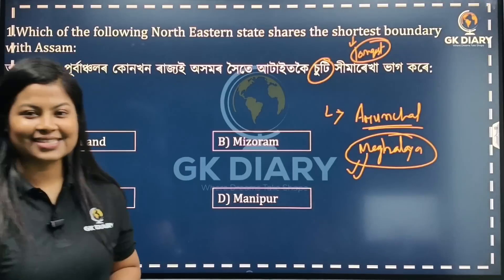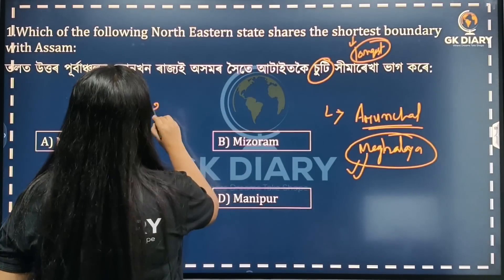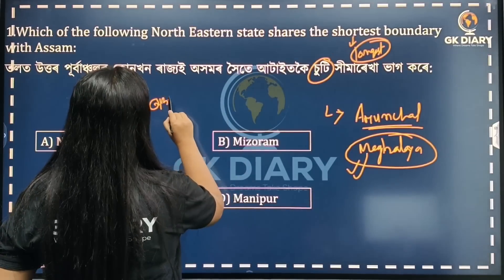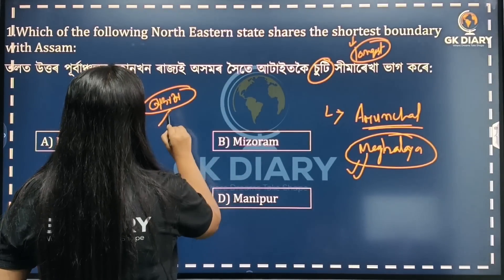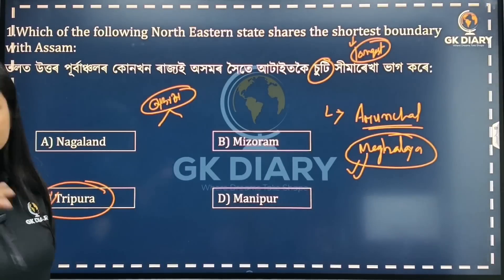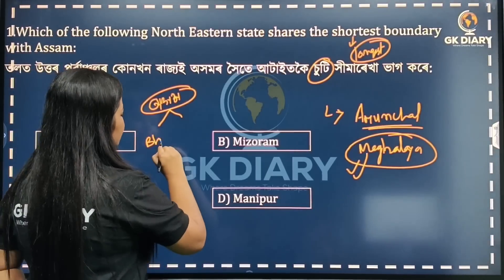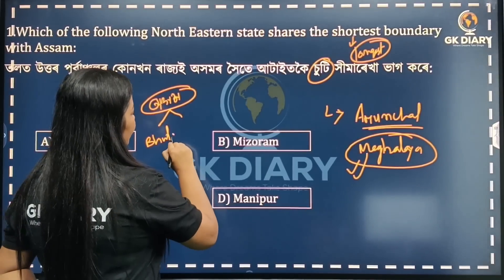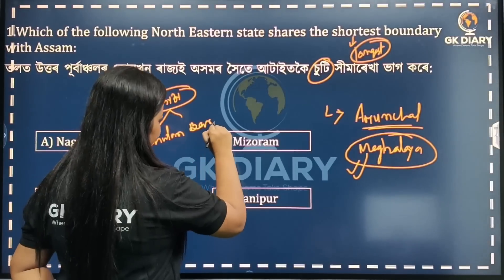Tripura is the correct answer. Along with this, you can also note that Assam shares its international boundary with neighboring countries — including Bhutan and Bangladesh.